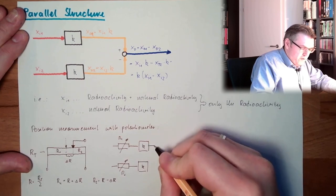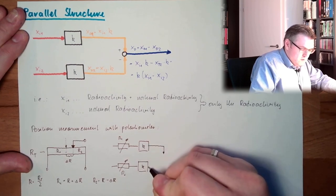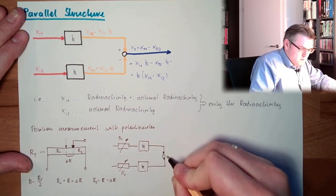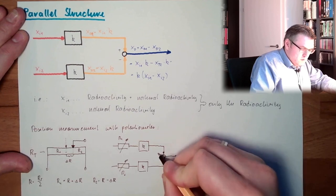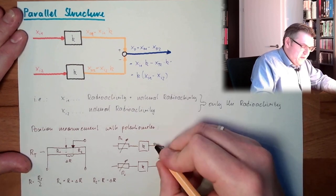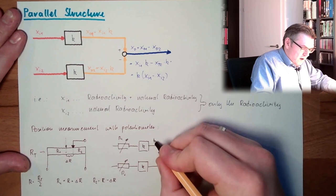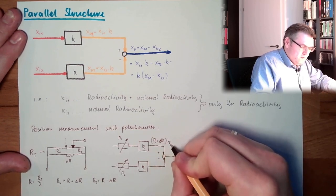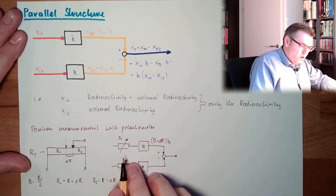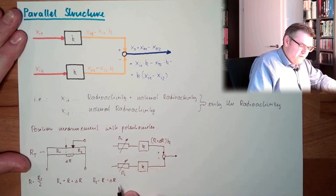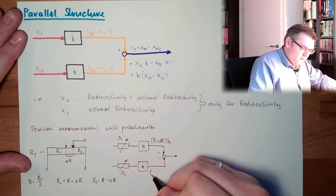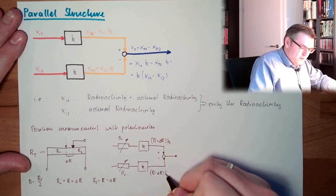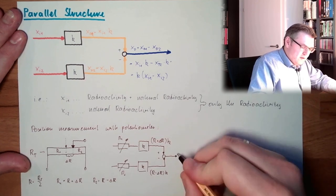I use this parallel structure over there, plus and minus. Here I have R plus delta R multiplied by k. R1 multiplied by k. Here I have R2 multiplied by k. So I have R minus delta R multiplied by k. What we've got here?